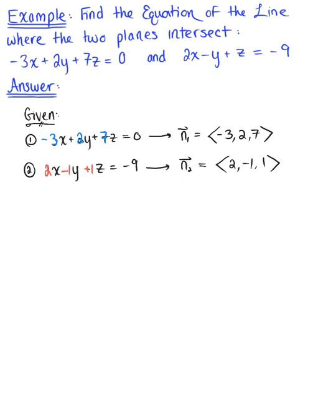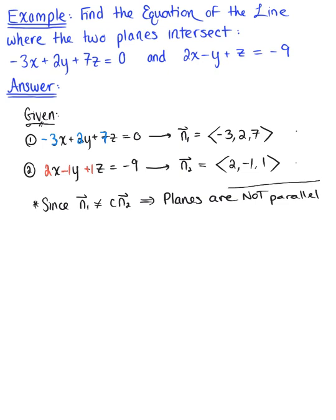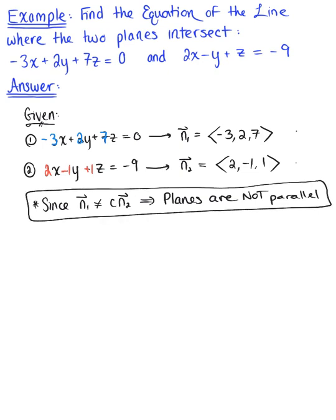Now before we get started, we always want to check: are these planes parallel? Looking at our two normal vectors, they are not scalar multiples. So since the normal vector n sub 1 does not equal a scalar multiple of the second normal vector, these vectors are not parallel, which thus implies that the planes are not parallel. Since the planes are not parallel, it is safe to assume they intersect, and we can proceed into finding the line of intersection.